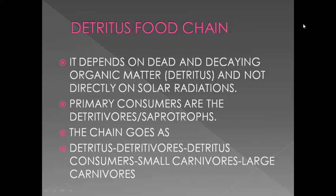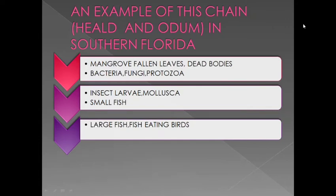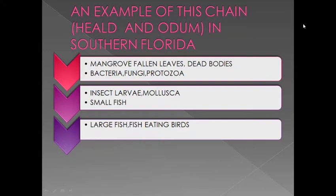A common example of a detritus food chain is a mangrove ecosystem where fallen leaves or dead bodies are called detritus. These are eaten by bacteria, fungi, and protozoa. Then insects, larvae, and mollusca which eat bacteria, fungi, and protozoa are called detritus consumers. Then small carnivores eat them, and then larger carnivores like large fish or fish-eating birds eat the small carnivores.